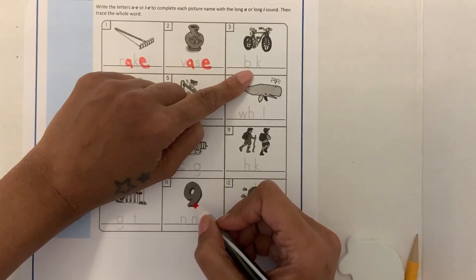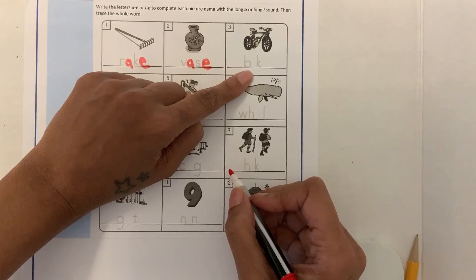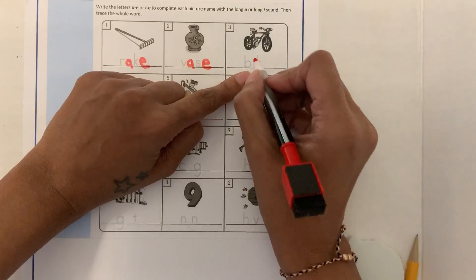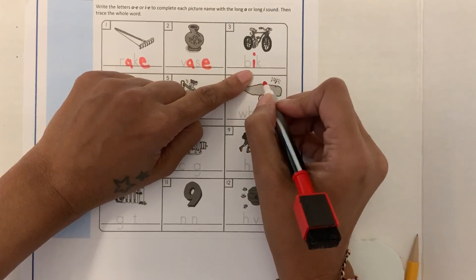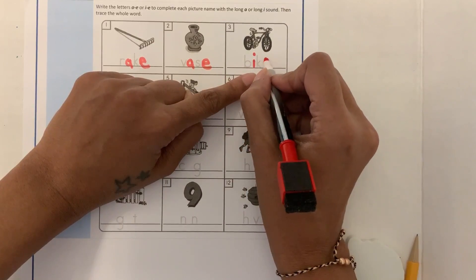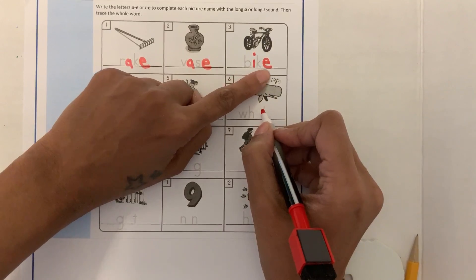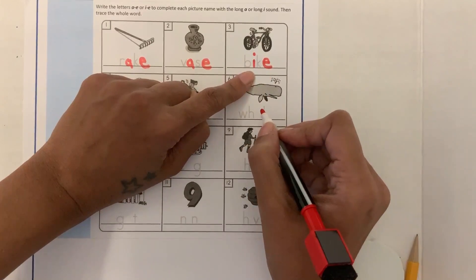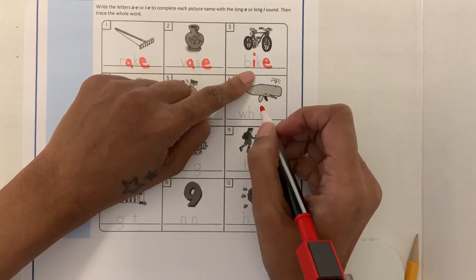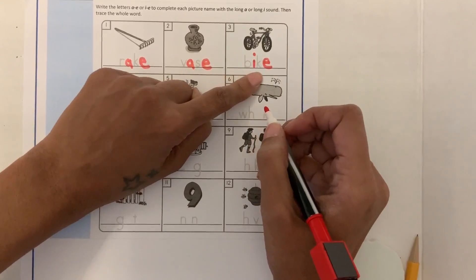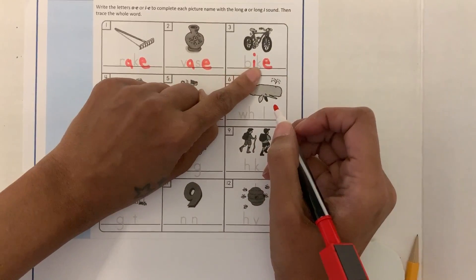This is a picture of a bike. What do you hear? I, the long I sound. And we need to add the E because the silent E changes the I, which we have learned is short I, to the I sound. So that's bike.